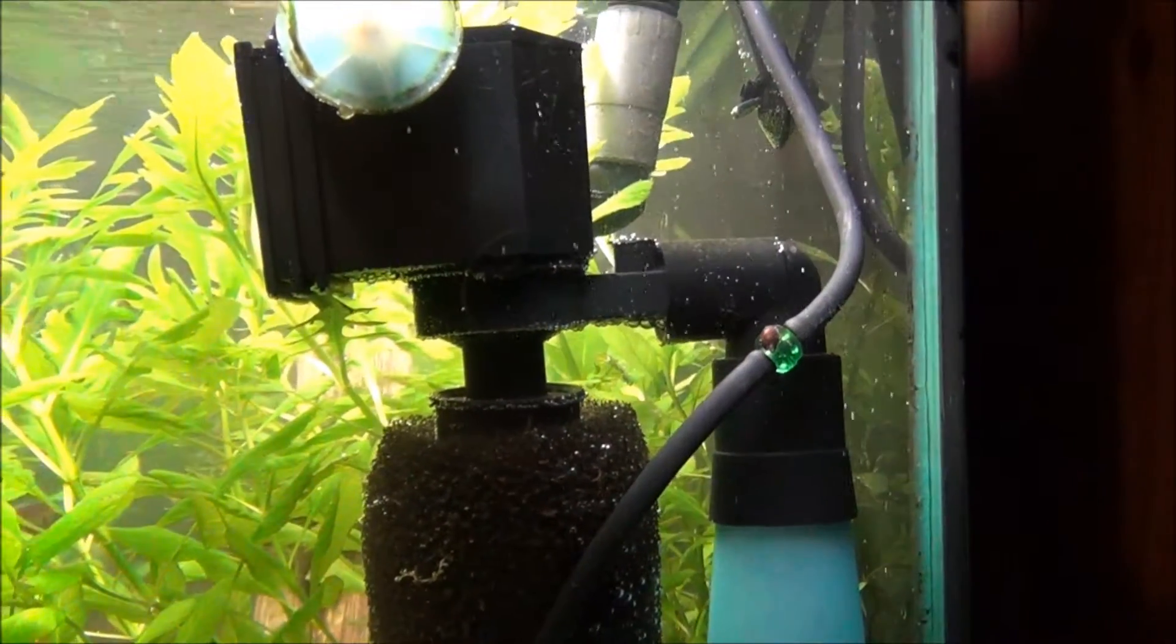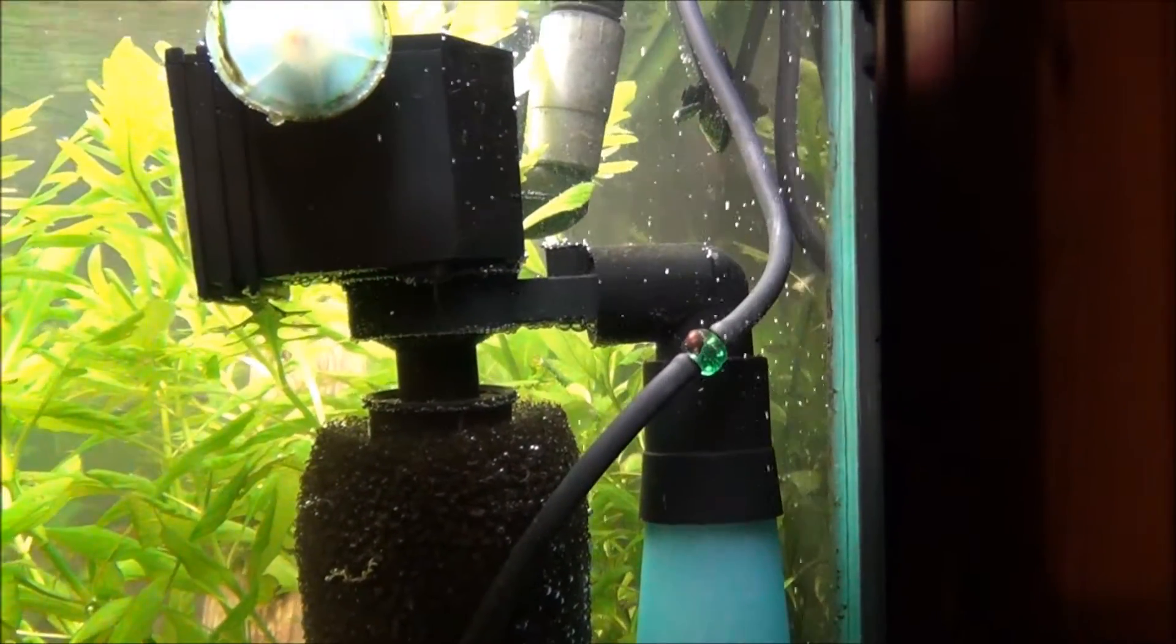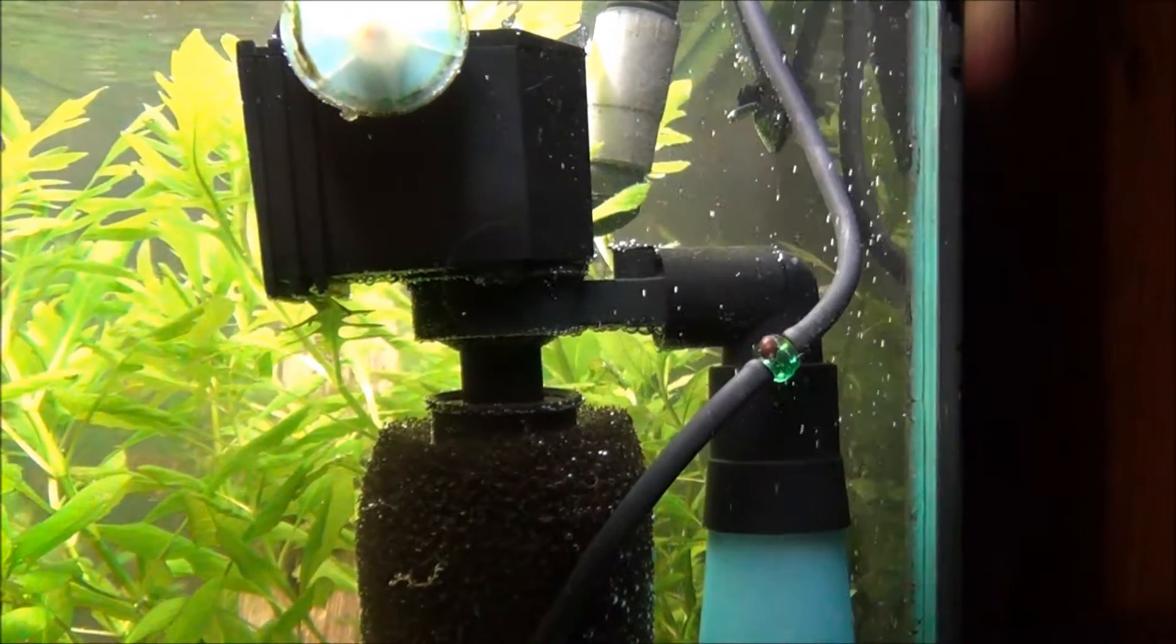It came with this little fitting to go into an underground filter, so it works for the same purpose. This is a gravel siphon. Just cut off the tip on top, put that on there. You can silicone it if you want to, but I don't because it makes it easier to clean.